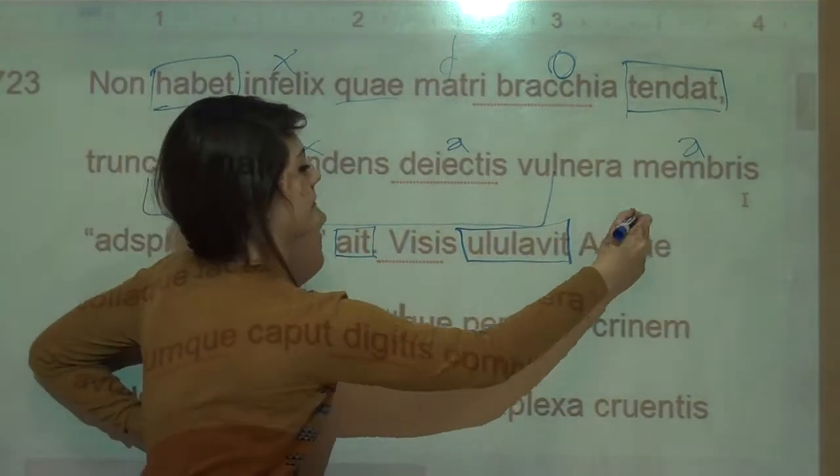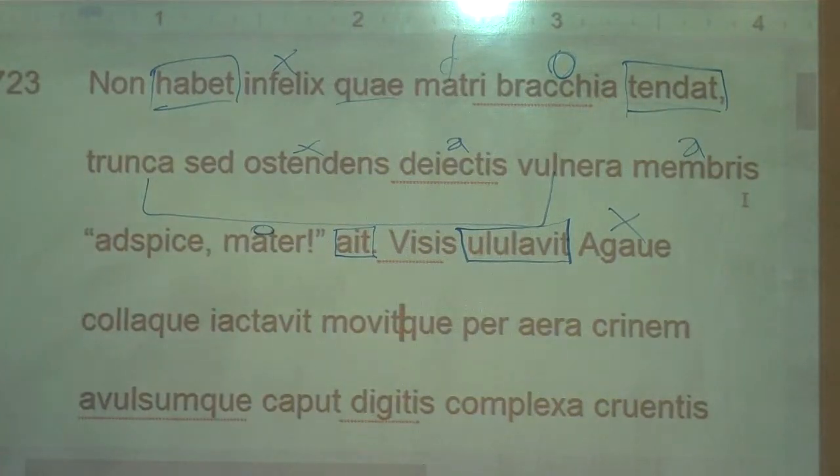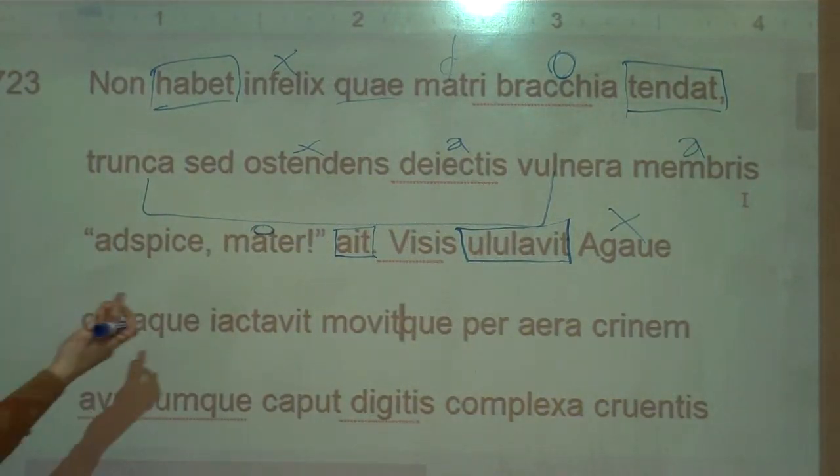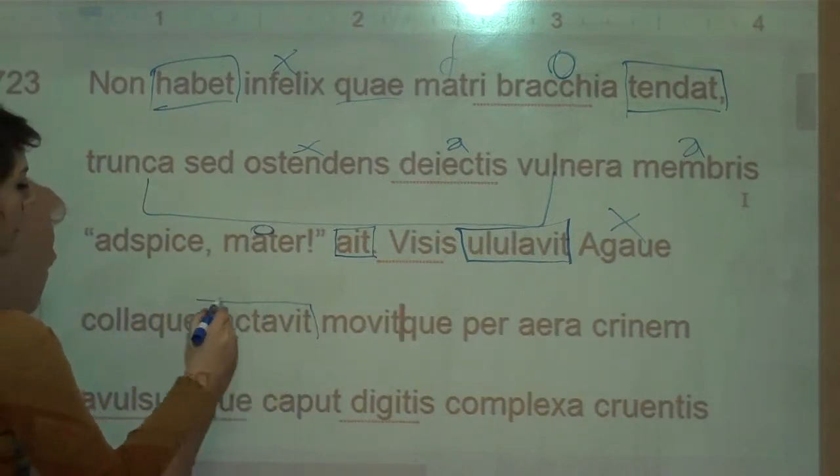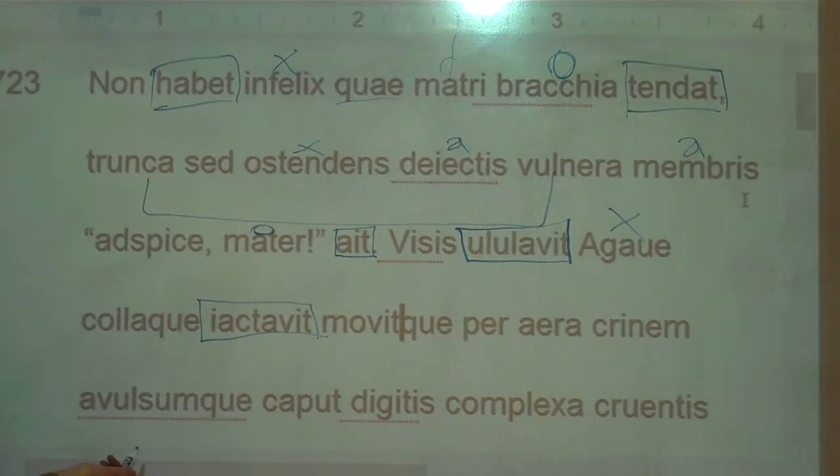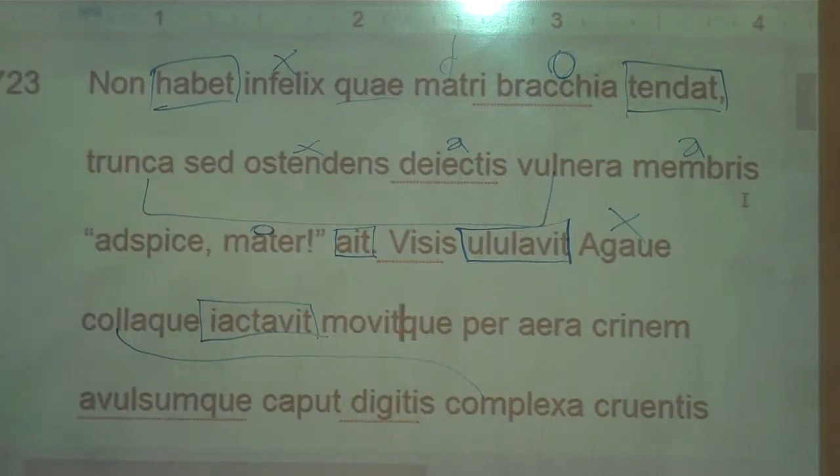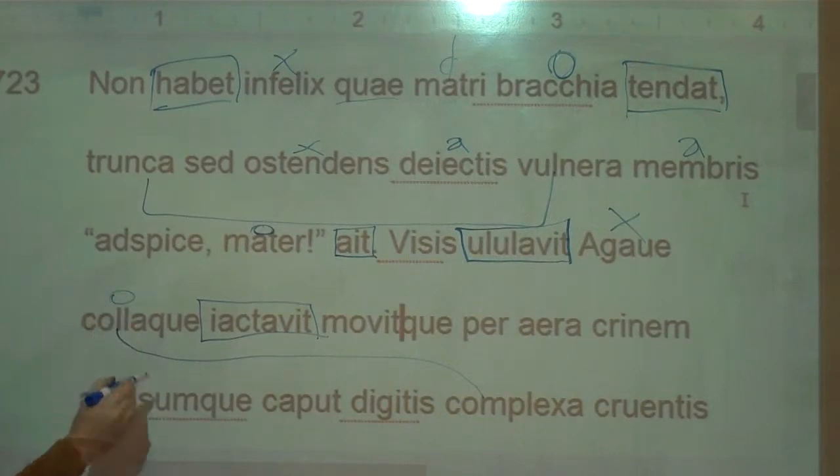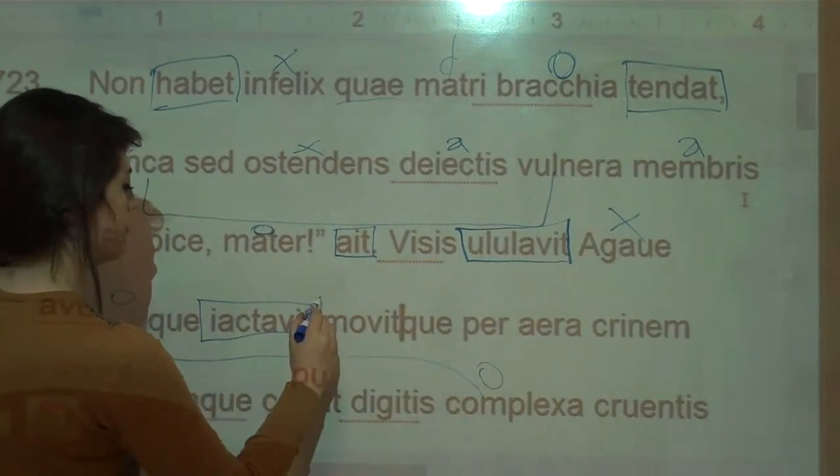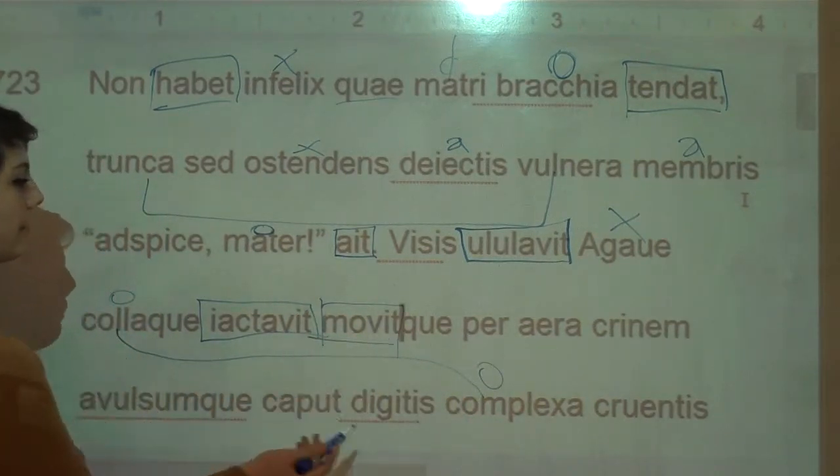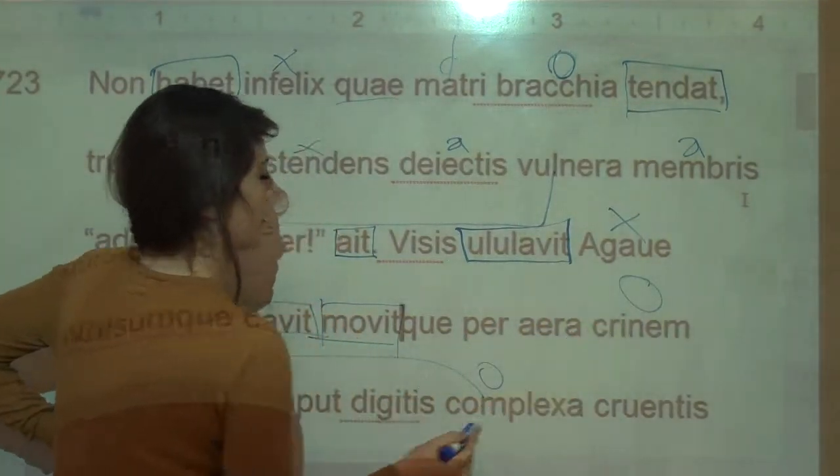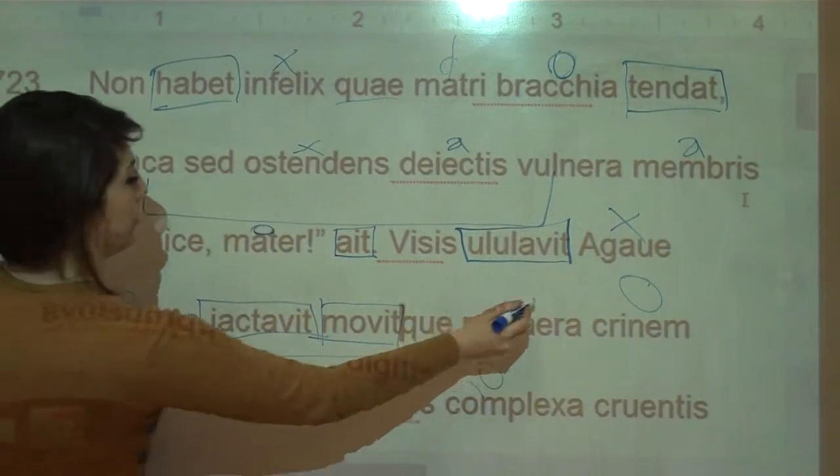So Agave howled, having seen this, and she threw back her like twisted neck sort of. These go together, I don't know why they're so far apart. That's neck. And moved her hair, crinem, through the air, aera.